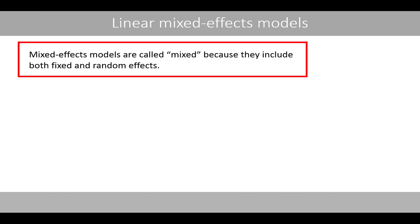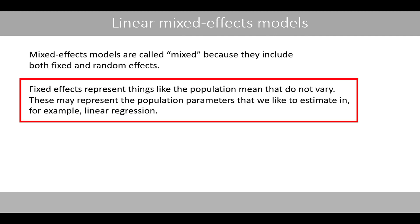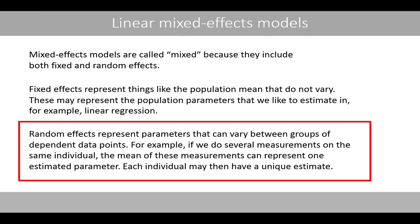Mixed effects models are called mixed because they include both fixed and random effects. Fixed effects represent things like the population mean that do not vary — these may represent population parameters that we like to estimate in, for example, linear regression. Random effects represent parameters that can vary between groups of dependent data points. For example, if we do several measurements on the same individual, the mean of these measurements can represent one estimated parameter, and each individual will then have a unique estimate.